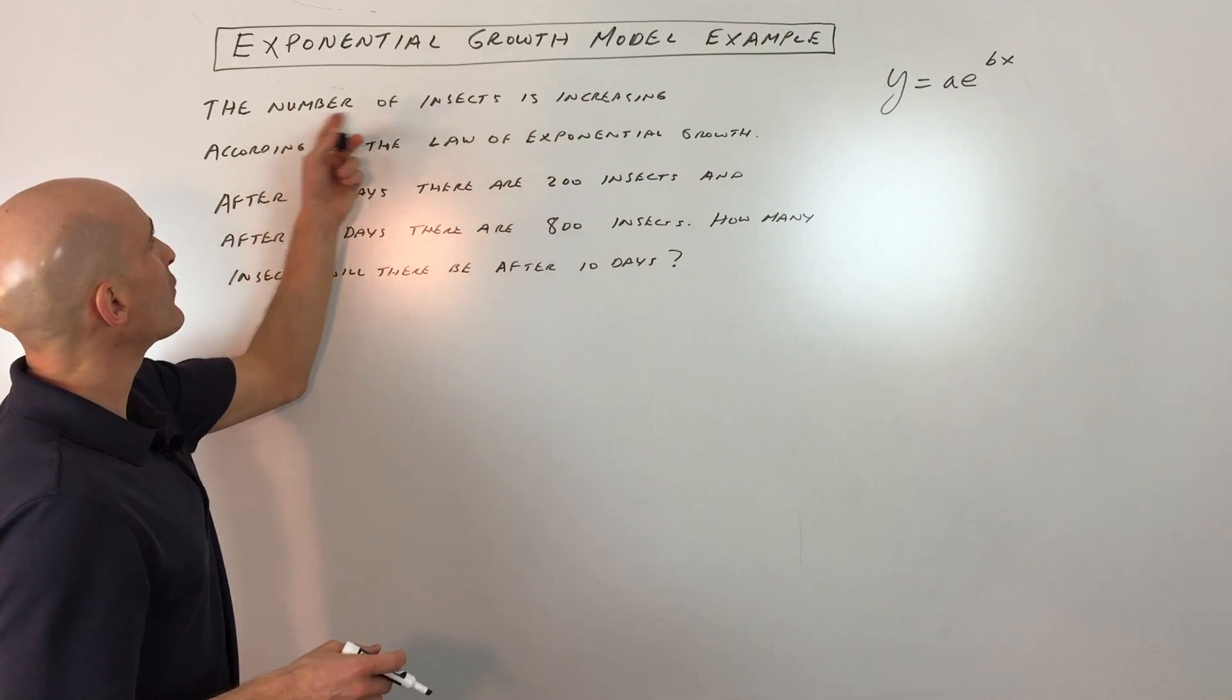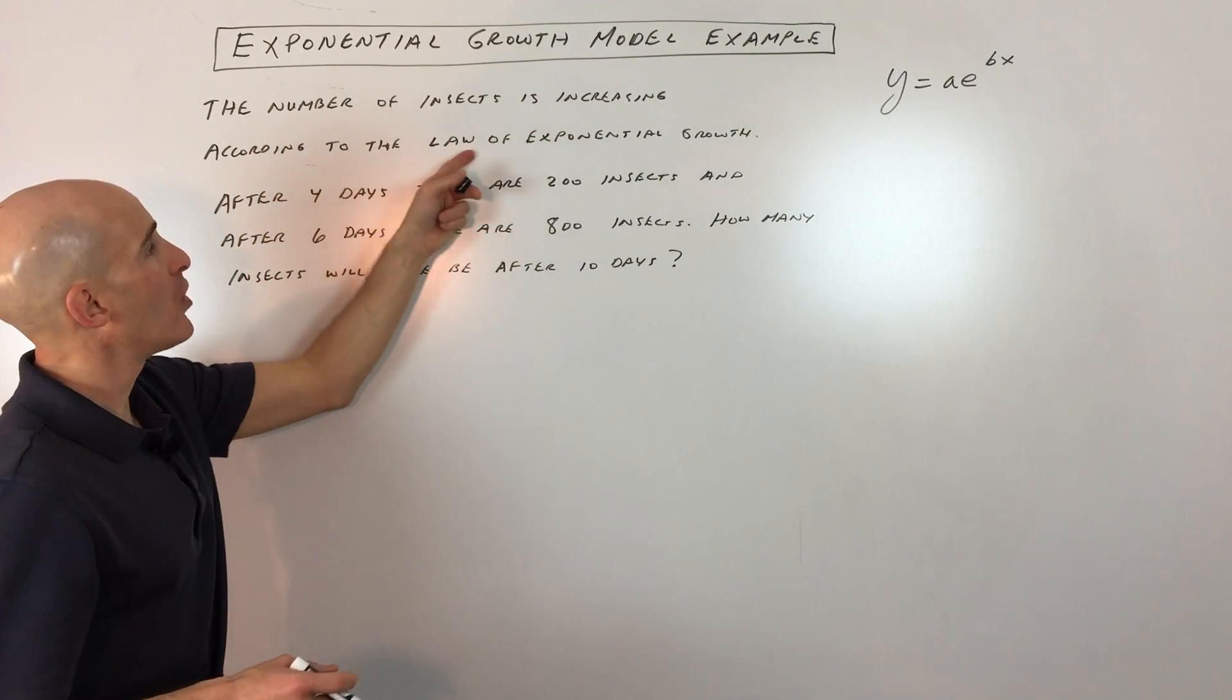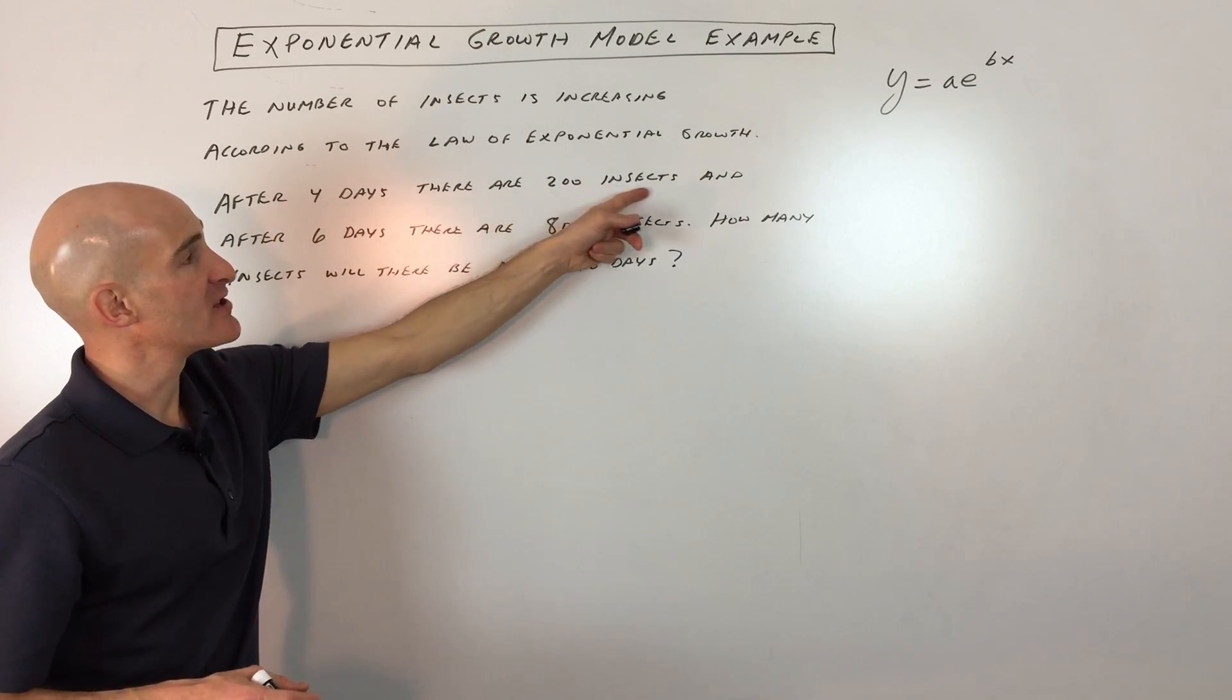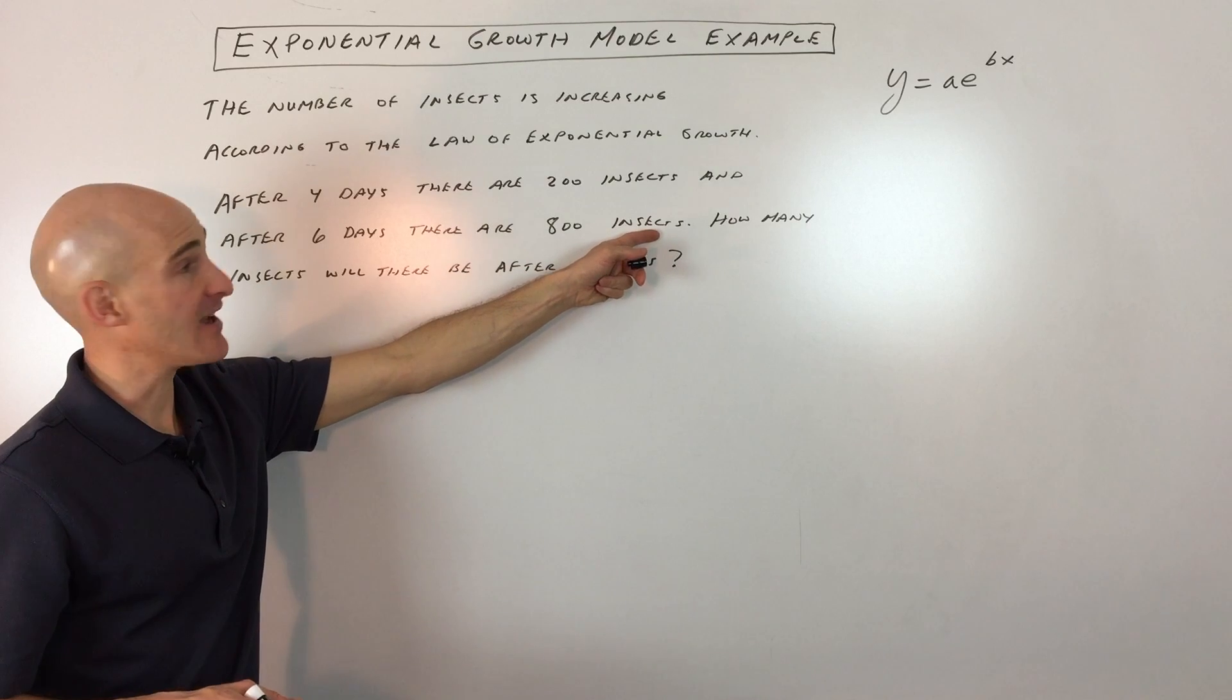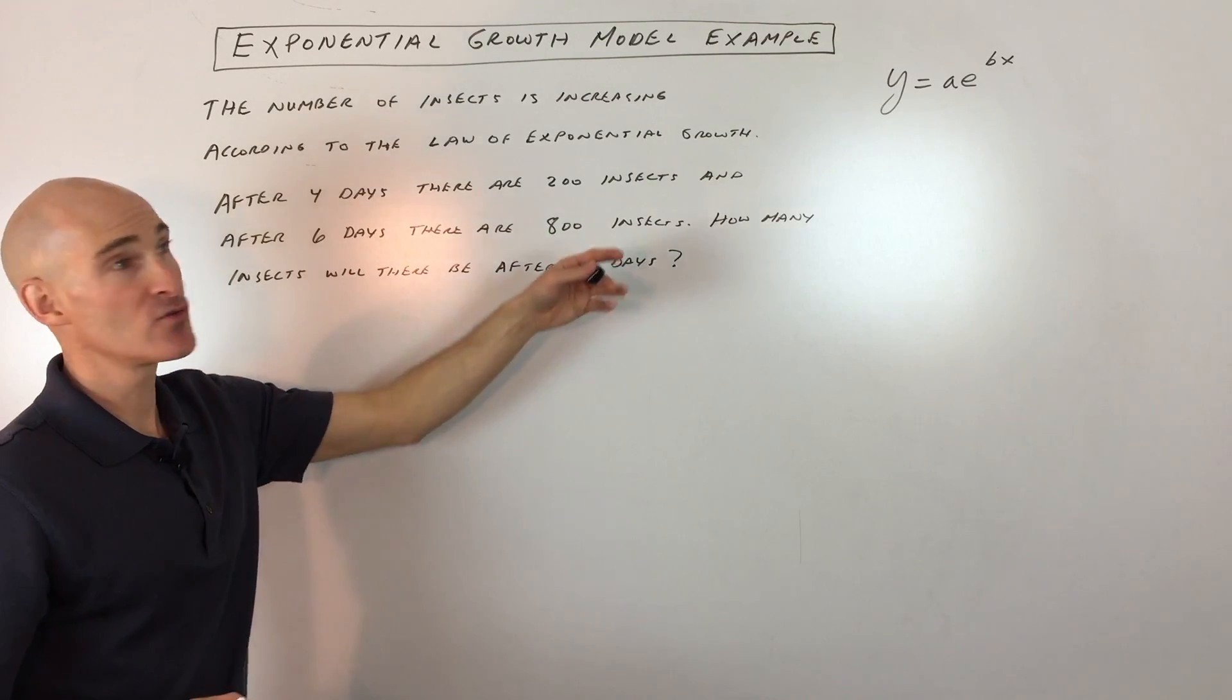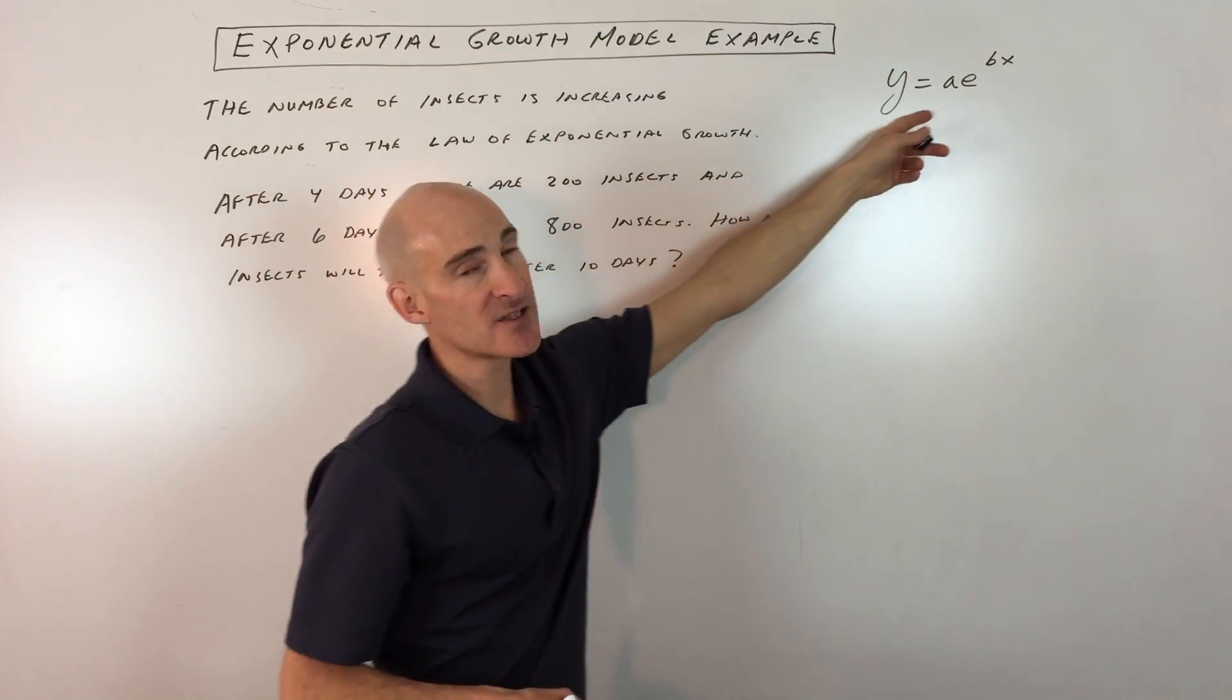The number of insects is increasing according to the law of exponential growth. After four days, there are 200 insects, and after six days, there are 800 insects. How many insects will there be after 10 days? We're assuming it's following this law of exponential growth.